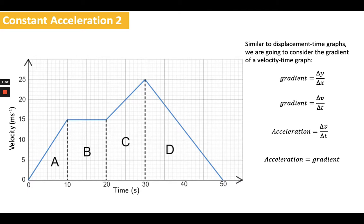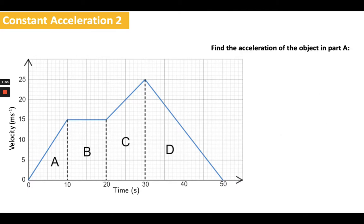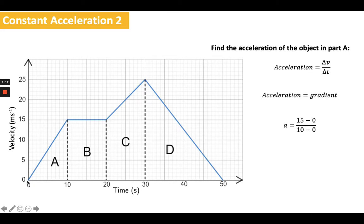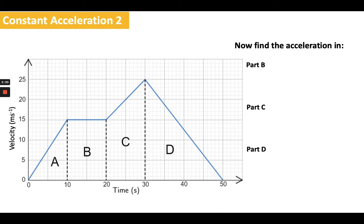So we'll look at how we can calculate with those. If I want to find the acceleration of the object in part A, because I know that acceleration is the change in v over change in t — which is the gradient — I just need to find the gradient of the line in A. To do that, you do 15 minus 0, so that's the change in y, over the change in x, which is 10 minus 0. Now 15 divided by 10 is 1.5 meters per second squared, and the value is positive — a positive gradient means a positive acceleration. So it's as easy as that. I'd like you to find the acceleration in the other three parts. Pause the video to have a go yourself, and then I'll show you the answers in a second.